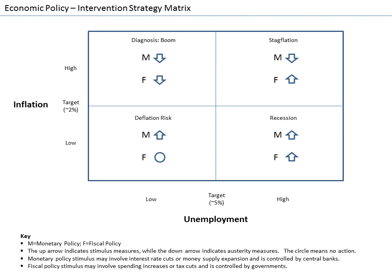The amount of unemployment in an economy is measured by the unemployment rate, i.e. the percentage of workers without jobs in the labor force. The unemployment rate only includes workers actively looking for jobs. People who are retired, pursuing education, or discouraged from seeking work by a lack of job prospects are excluded.